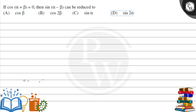Hello, let's see this question. The question says that if cos(α + β) is equal to 0, then sin(α - β) can be reduced to: option A cos(β), option B cos(2β), option C sin(α), option D sin(2α).